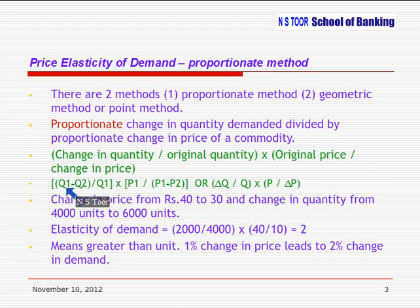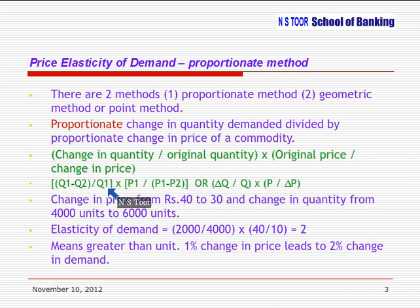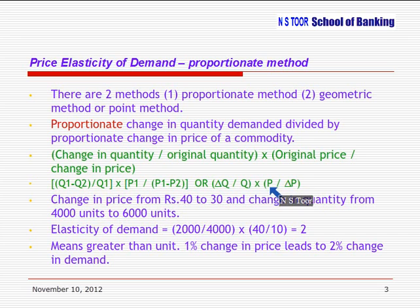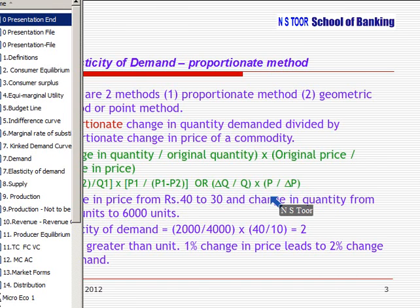We can also express it like this: Q1, that is original quantity, minus Q2, that is changed quantity, divided by original quantity — this represents change in quantity over original quantity — multiplied by original price divided by change in price. So the formula can be represented as: change in quantity divided by original quantity, into original price divided by change in price.